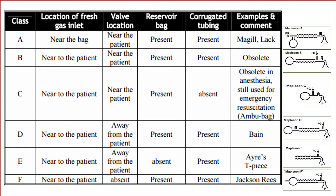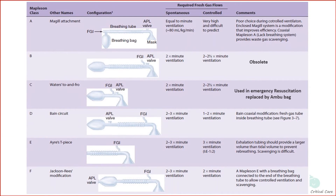The summary of characteristics of the six Mapleson systems are laid down here. This table shows the fresh gas flow requirement for each Mapleson circuit. Mapleson A is best for spontaneous ventilation.